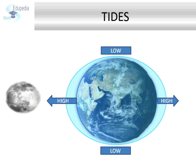The moon's gravity pulls the water on the side of the Earth nearest to it, making the water on that side bulge outward, causing a high tide. A similar bulge occurs on the opposite side of the Earth, caused by the centrifugal force produced due to Earth's rotation. Between these two areas of high tide are the areas of low tide, where the water levels are reduced.